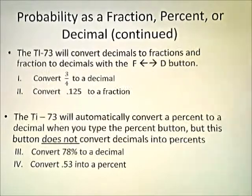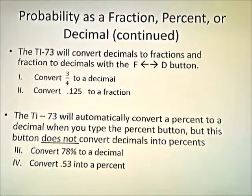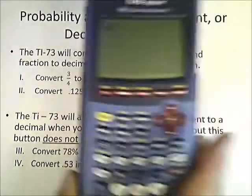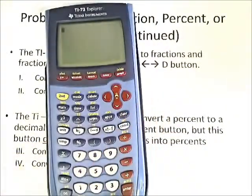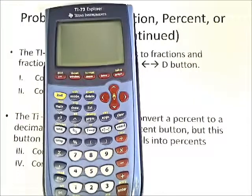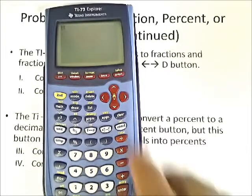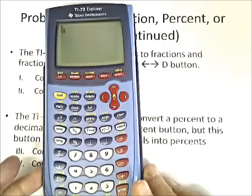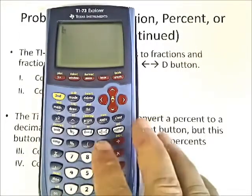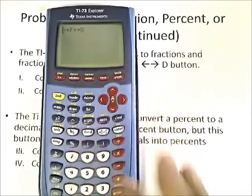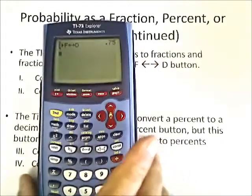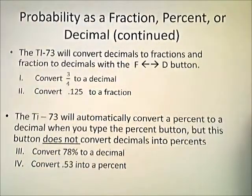Let's look at this again. Probability is a fraction, percent, or decimal. We're working some problems using your calculator. We're looking at converting 3/4 to a decimal. Using your calculator, we're going to hit the BC function, then put in the fraction 3/4. When we look at that as a decimal, it's going to be 0.75.